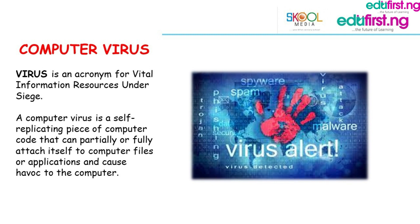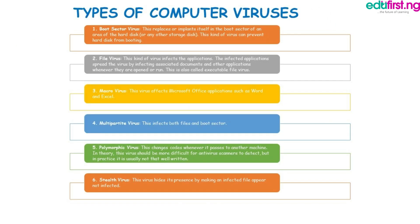Now let's look at the types of computer viruses. Number one is the boot sector virus — this replaces or implants itself in the boot sector of the hard disk and can prevent the hard disk from booting. Number two is the file virus — the file virus infects applications, and the infected applications then spread the virus by infecting associated documents and other applications whenever they are opened or run. This is also called executable file virus.